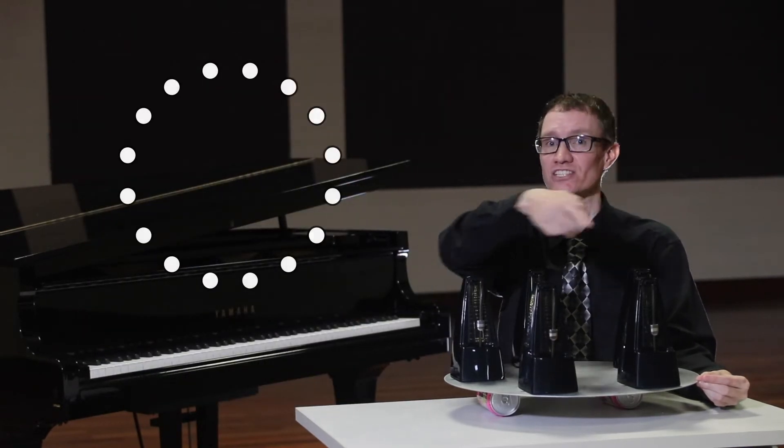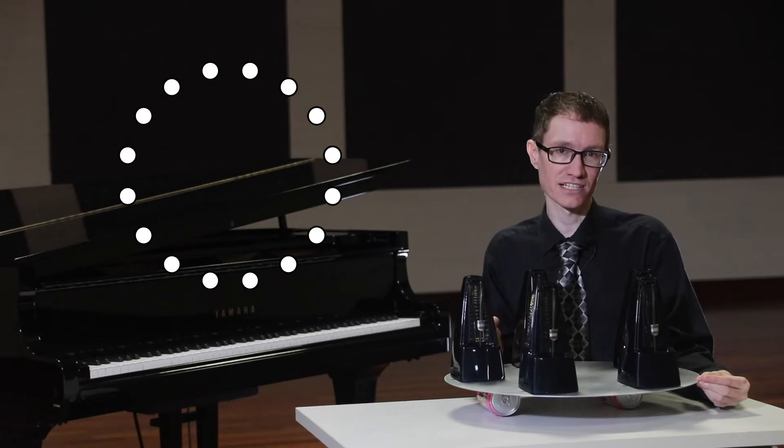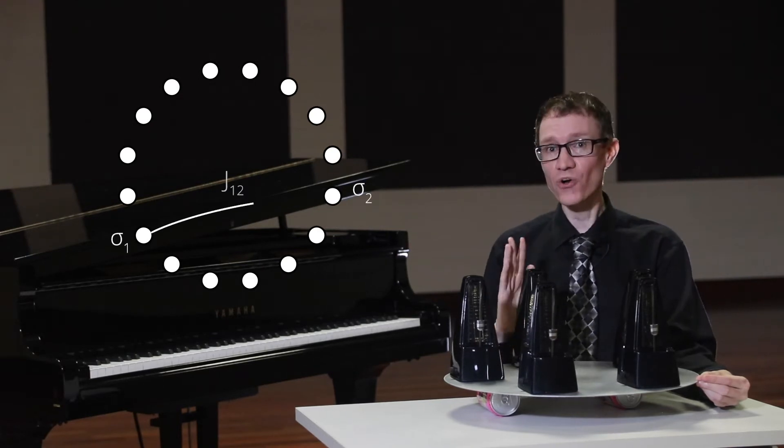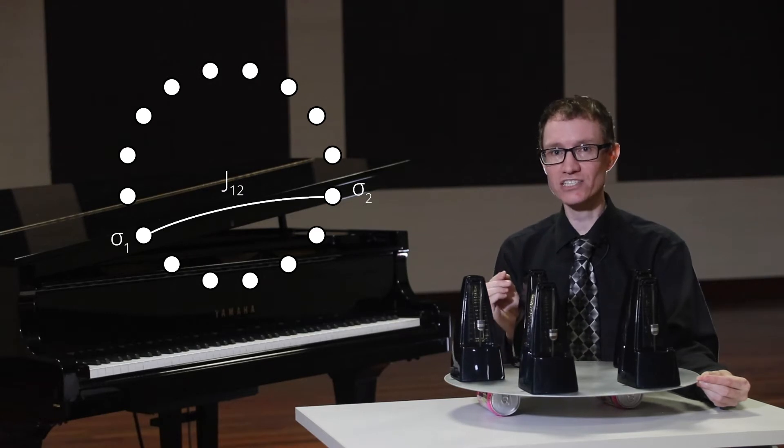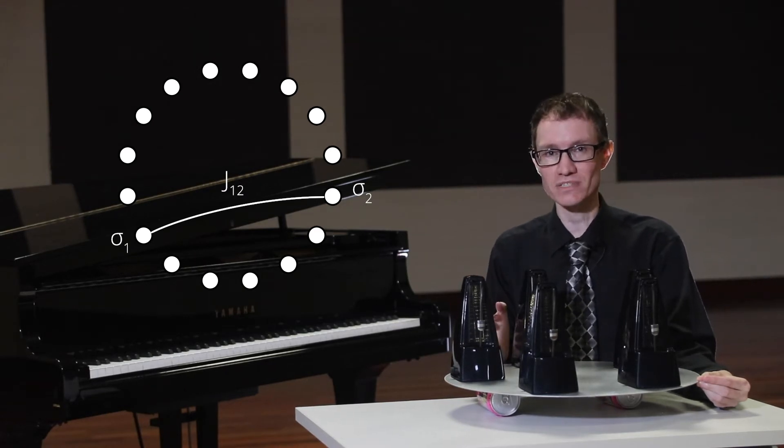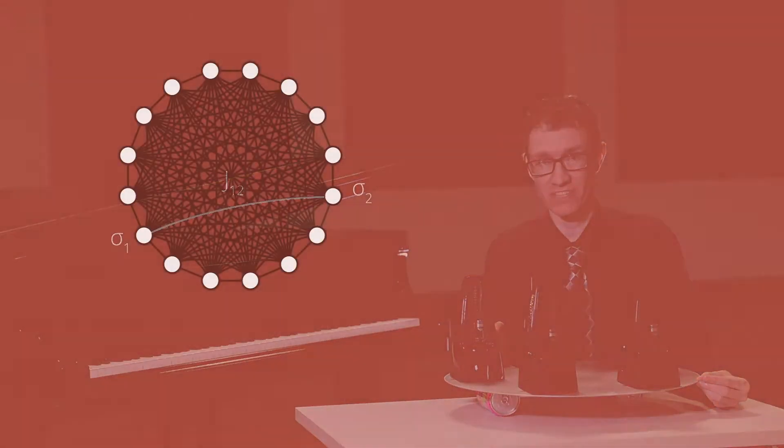Imagine that we had a system of thousands of such coupled oscillators and we could control the interactions between them. It turns out that such a system of coupled oscillators forms a highly parallel type of computing architecture known as the Ising model.